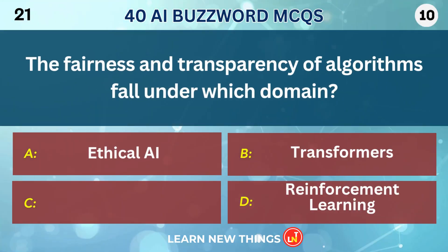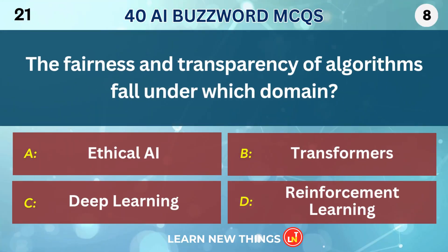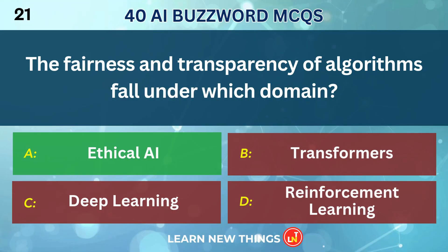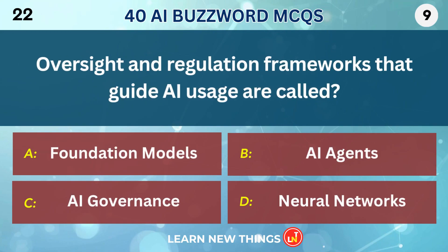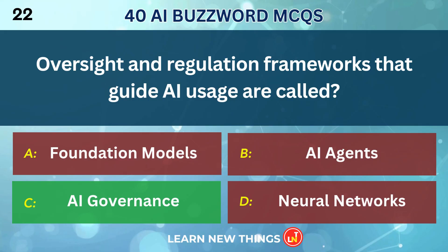The fairness and transparency of algorithms fall under which domain? Ethical AI. Oversight and regulation frameworks that guide AI usage are called AI Governance.